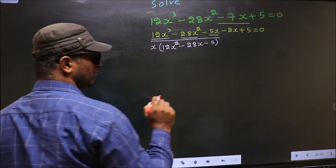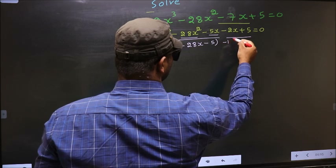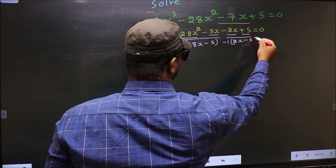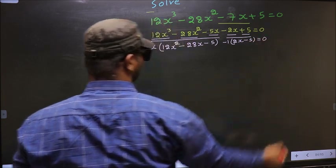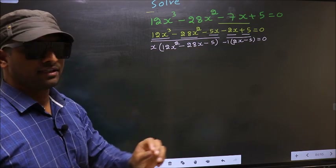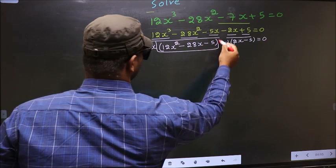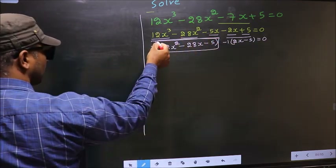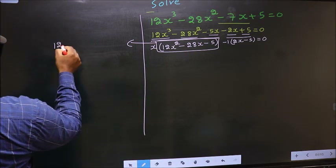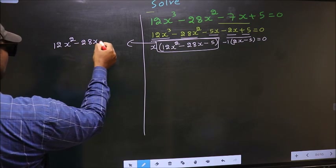From the last two terms, what can be taken out common is -1. You get -1(2x - 5) = 0. Now in this equation we have come across the quadratic 12x² - 28x - 5, so I will factorize this quadratic.